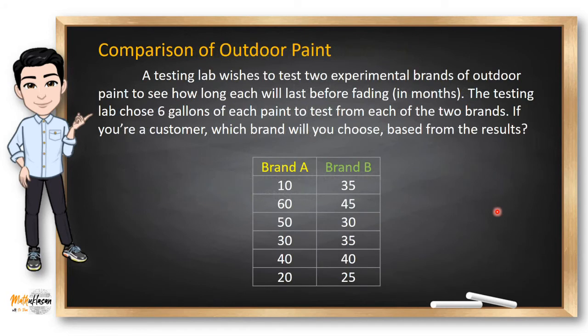Let's have another example. A testing lab wishes to test two experimental brands of outdoor paint to see how long each will last before fading. Our variable time will be in terms of months. The testing lab chose 6 gallons of each paint to test from each of the two brands. If you're the customer, which brand will you choose based from the results? Under the first paint of brand A, the paint faded after 10 months. The second paint faded after 60 months.